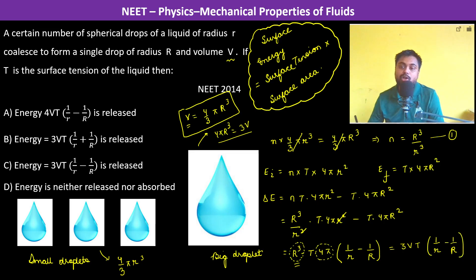And since small r is less than capital R, therefore this term is positive. This term is already positive. So therefore this is the positive energy difference. So therefore initial energy was more, final energy is less, and that is why this amount of energy is going to be released.